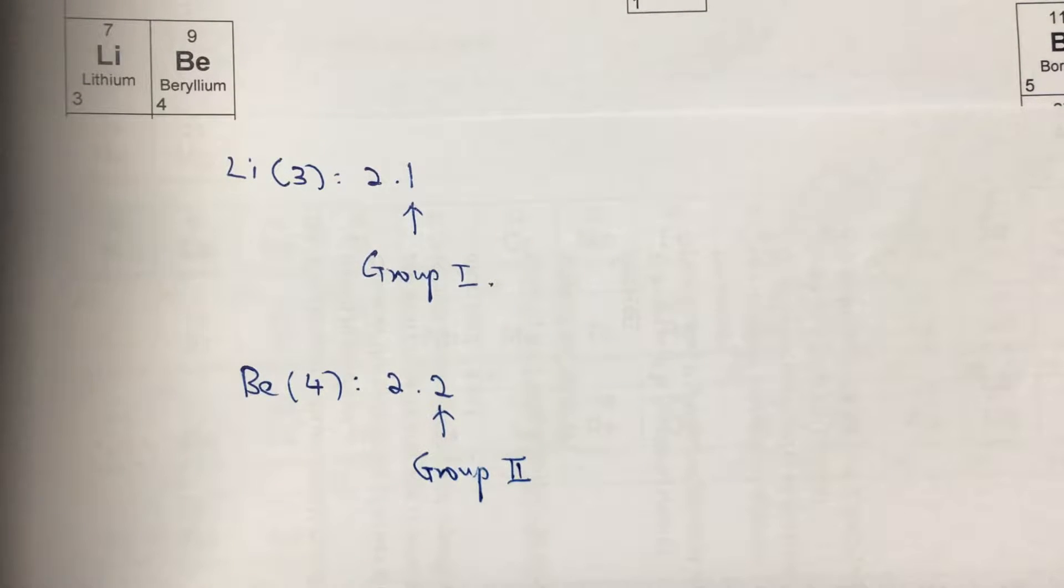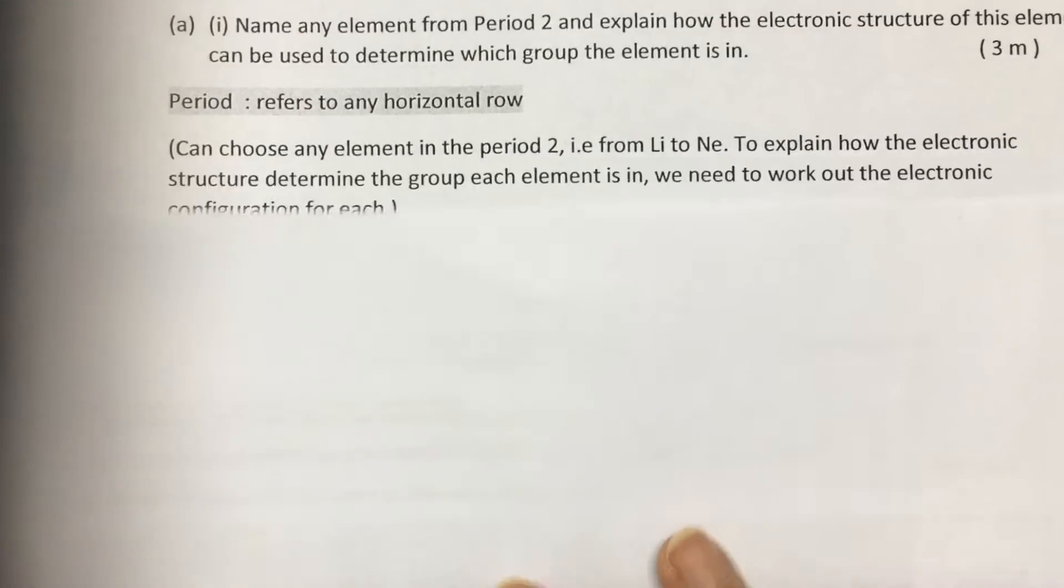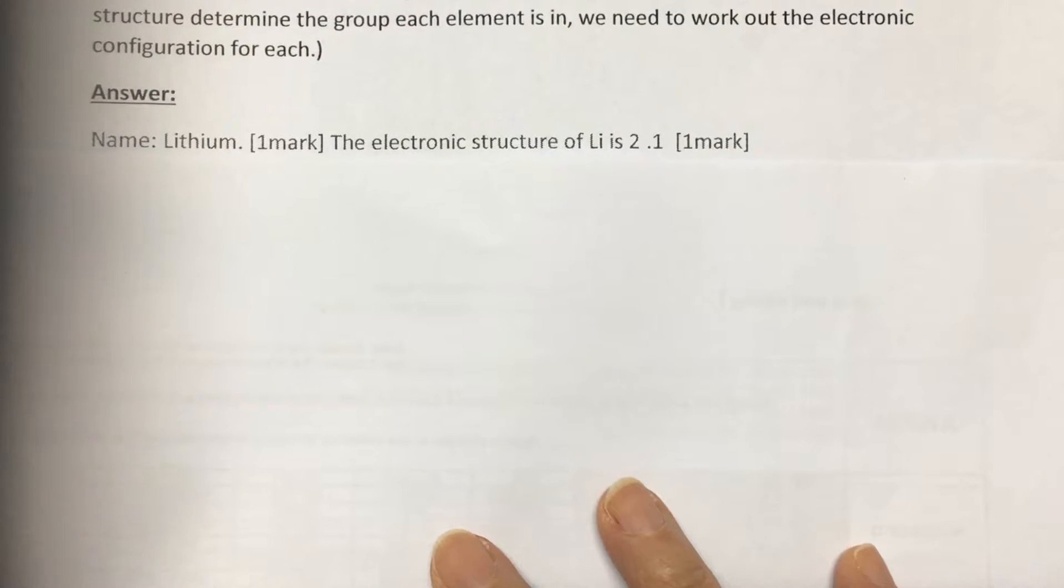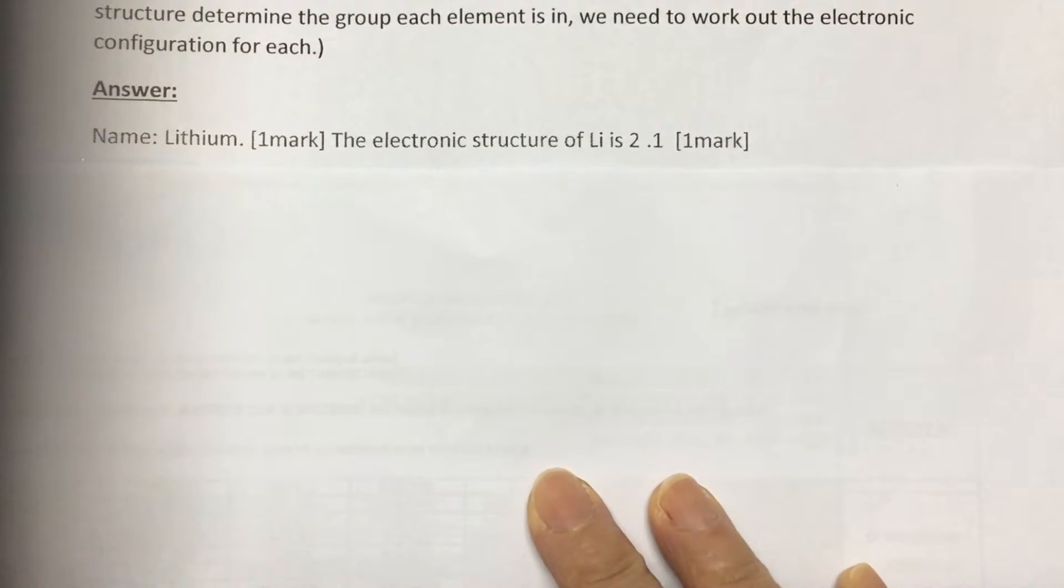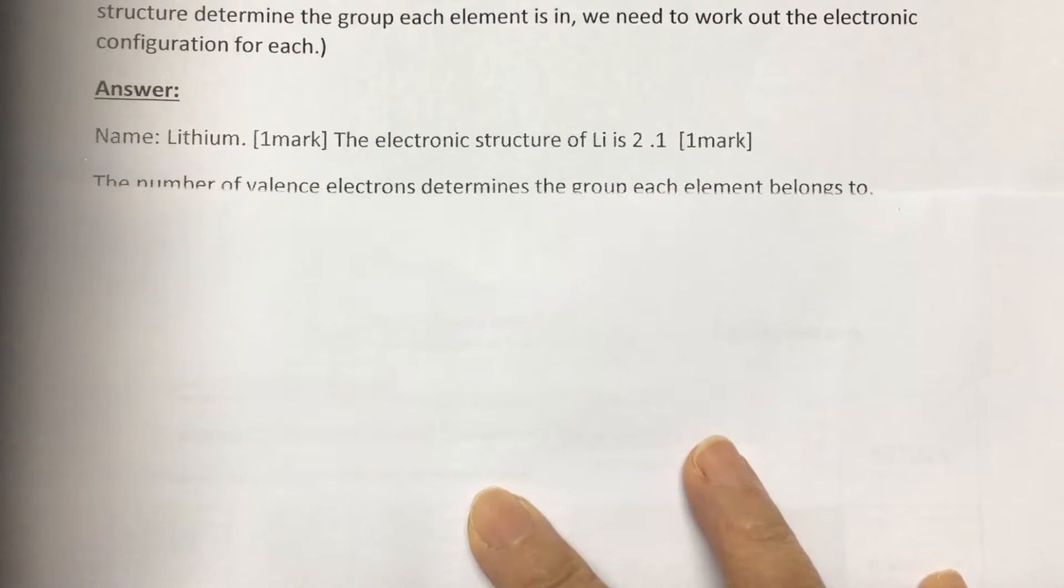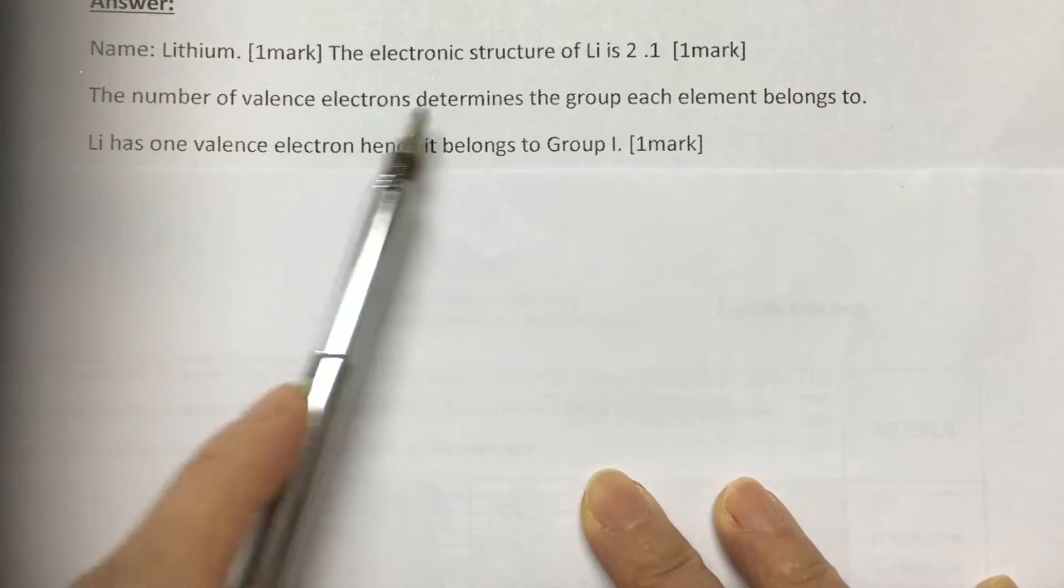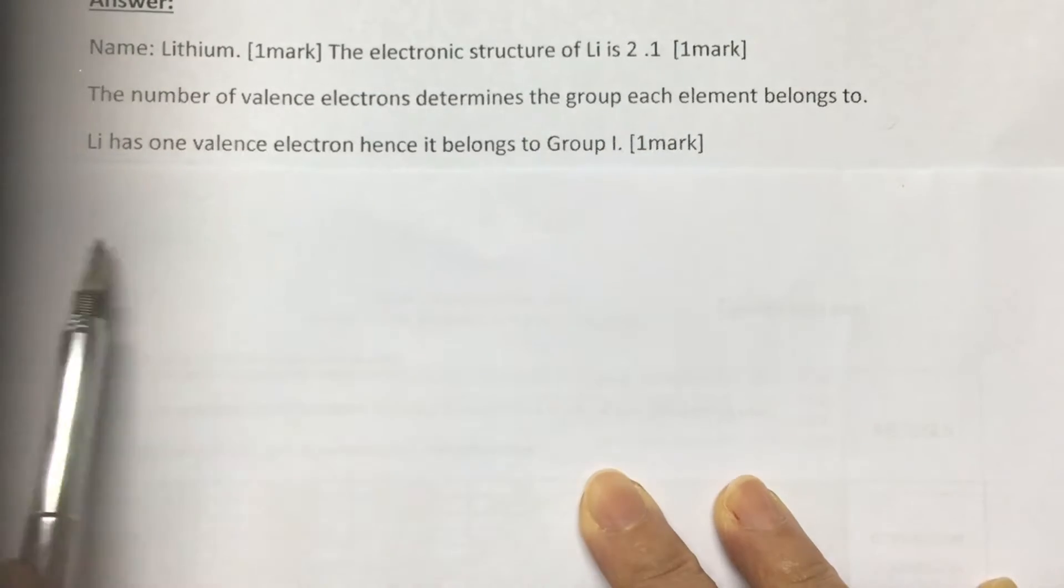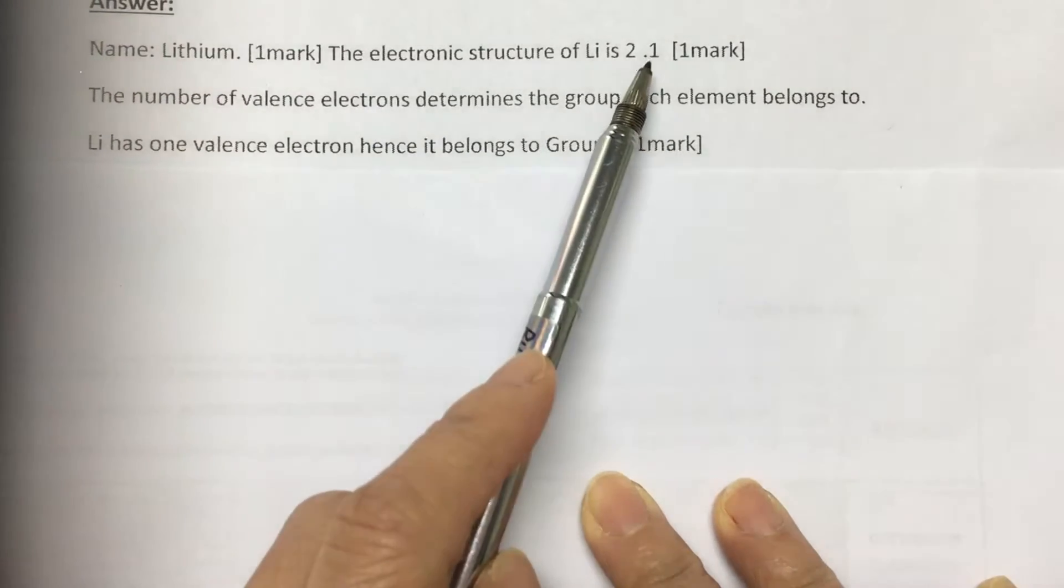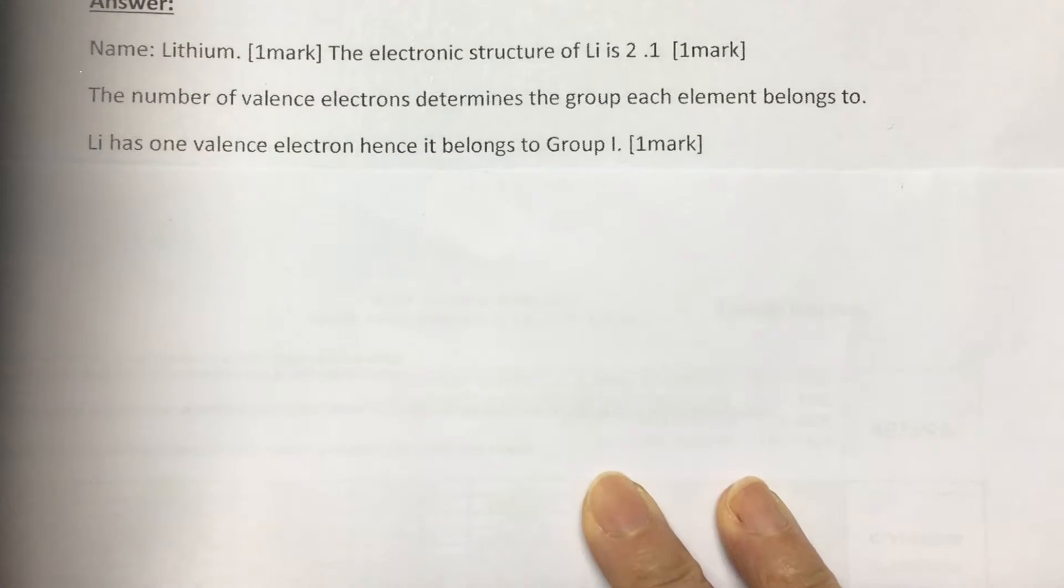I just work out 2 to show you, so you can pick any one of these elements across period 2 to answer this question. So let me show you the answer. Lithium is the element that we have picked. The electronic configuration or structure is 2.1. That's another mark. And the third mark, we explain that the number of valence electrons determines the group this element belongs to. In the case of lithium, it has one valence electron, hence it belongs to group 1. So that accounts for 3 marks.